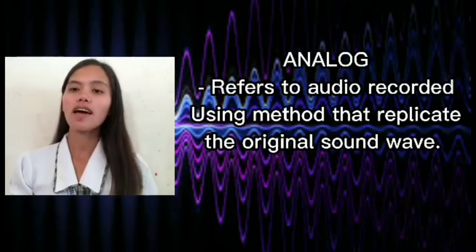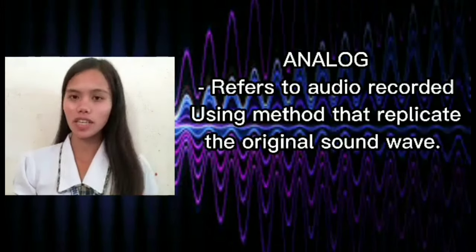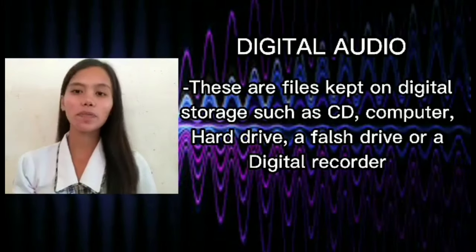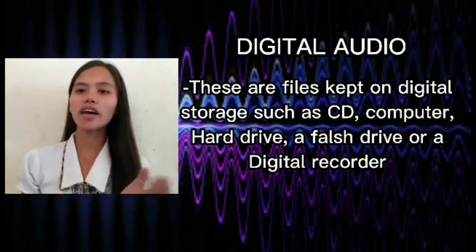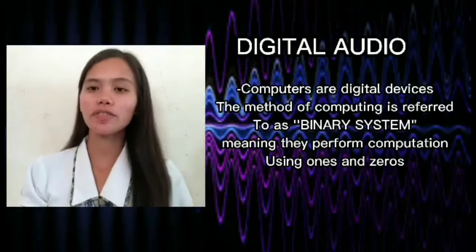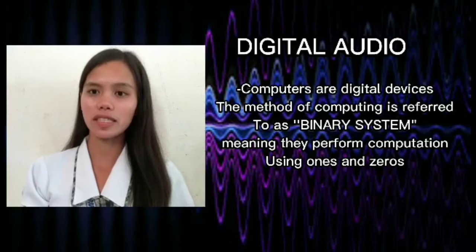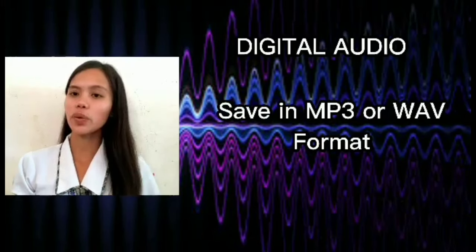Let's talk first what is analog. Analog refers to the audio recorded using methods that replicate the original sound waves. Digital audio, these are files kept on digital storage, such as CDs, computer hard drive, flash drive, or digital recorder. Next is computers are digital devices. The method of computing is referred to as a binary system, meaning they perform calculations using ones and zeros. These are saved in MP3 or WAV format.